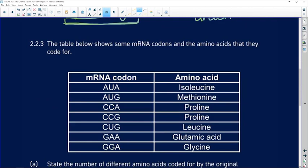The table below shows some mRNA codons and the amino acids that they code for. So, for example, in this column, we've got mRNA codon AUA and the amino acid it codes for is isoleucine. All the way down the table.